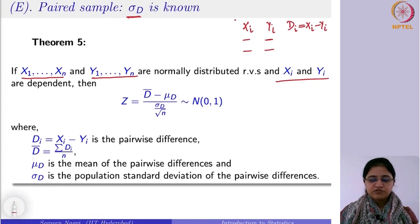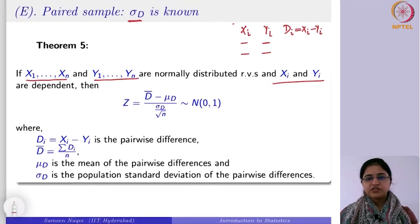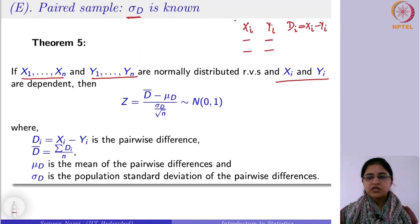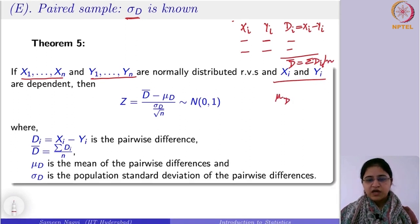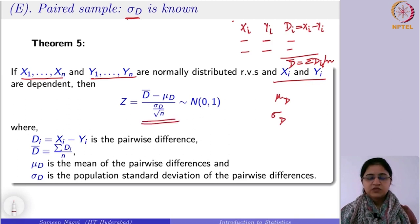Suppose x_i's are before the drug is administered and y_i's are after. In such cases they are dependent. We will note down the difference in these values. Once you get these d_i values, you can obtain d-bar — the mean — which is summation of d_i divided by the total number of observations. Sigma_d is the population standard deviation of the pairwise difference, which is known to us. Then this statistic will follow the standard normal N(0,1).